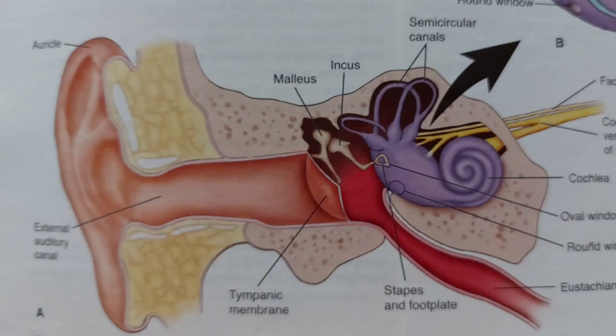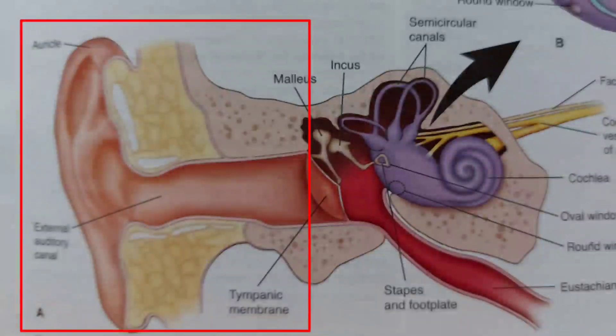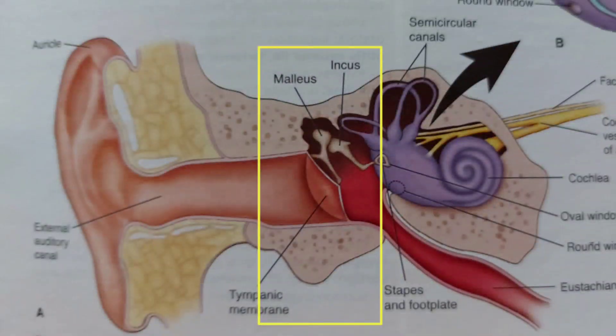In this video, we can see the basic anatomy of the ear. In this picture, you can see the outer ear — that is the auricle, external auditory canal — and up to the tympanic membrane. The tympanic membrane is part of the external ear. Then ossicles — malleus, incus, and stapes — and the eustachian tube are also included in the middle ear.